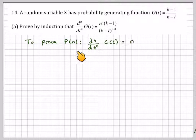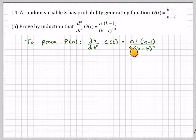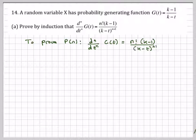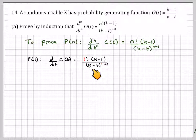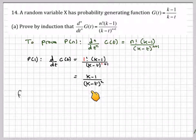We're going to let P(n) be the proposition that the n-th derivative of g(t) equals n factorial times (k-1) over (k-t) to the n plus 1. For P(1), if we put n=1 into the right-hand side, we get 1 factorial times (k-1) over (k-t) to the 1 plus 1, which equals (k-1) over (k-t) squared.